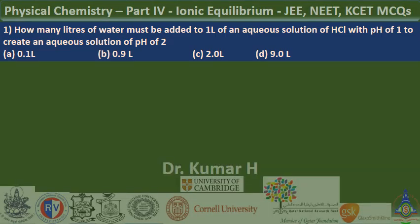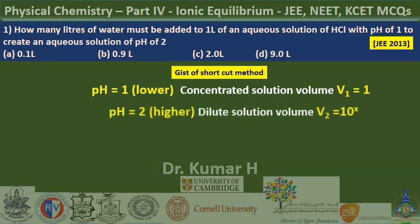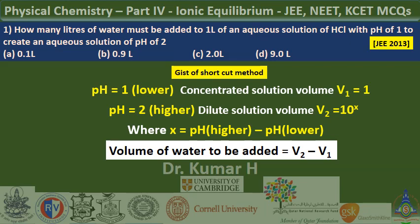Let me tell you the gist of the shortcut method I have explained. Lower pH is a concentrated solution of volume V1 and higher pH will be a dilute solution. The volume V2 is equal to 10 raise to x, where x equals higher pH minus lower pH. Once you calculate V2, V2 minus V1 gives the volume of water to be added to get a dilute solution from a concentrated solution. This is the simplest method to approach this type of problem.